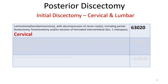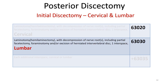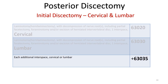These are posterior-based discectomies, and we divide them into initial discectomy — both in the cervical and lumbar — and we will discuss redo discectomies later. For the first case, assuming you perform a laminotomy with decompression of the nerve roots, including partial facetectomy, foraminotomy, and excision of herniated intervertebral discs across one interspace in the cervical spine, you would code that as 63020. The same procedure in the lumbar spine would be coded as 63030. For each additional interspace, cervical or lumbar, you code using 63035.